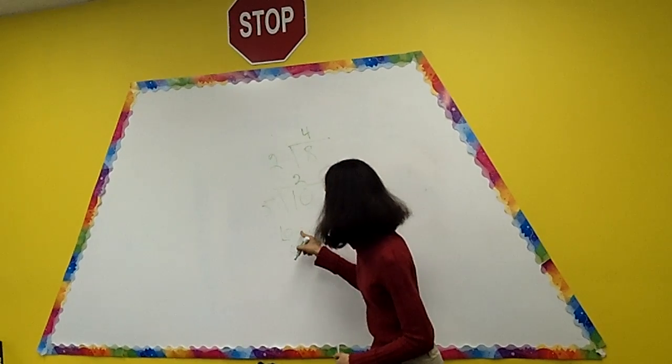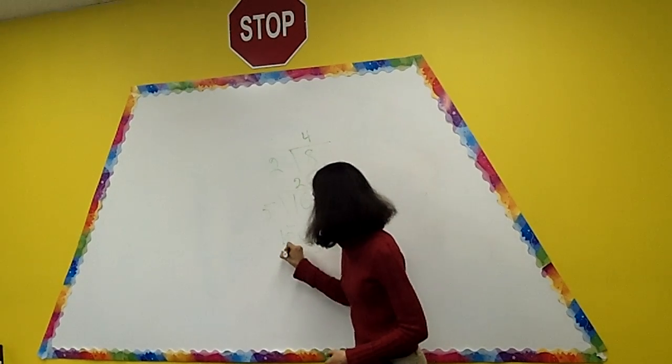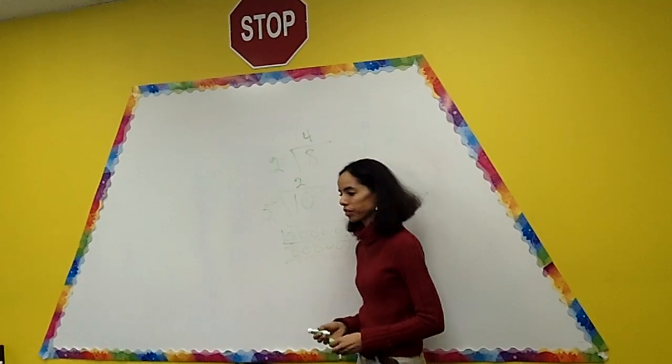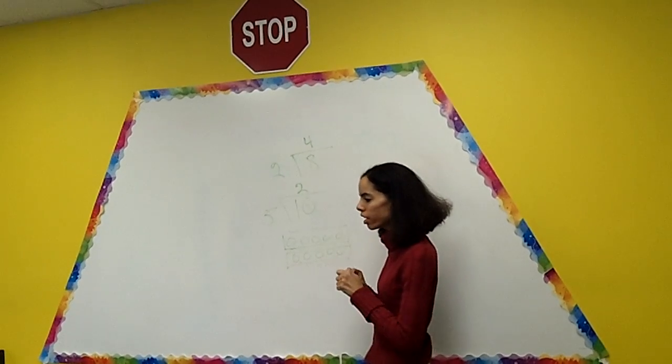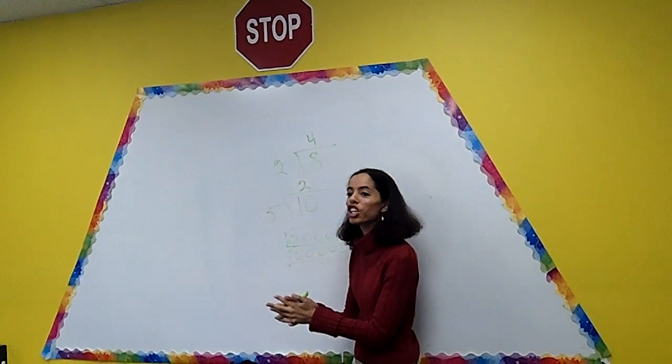I have ten cookies and I want to make them into groups of five. So here's one, two, three, four, five. Here's one group of five. And one, two, three, four, five. Here's another group of five. So leaders, how many groups of five do you see here? Two. Two. Very good. Only one person sees it. How many groups of five do you see? Two. Thank you.